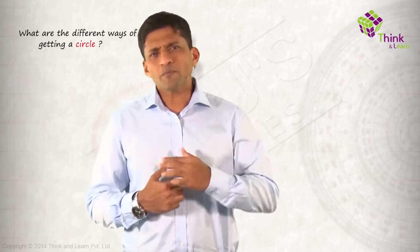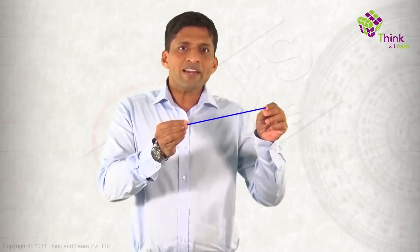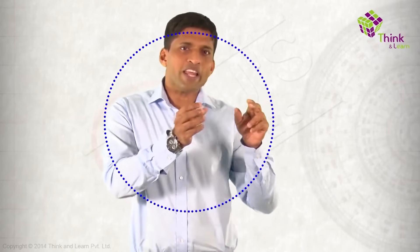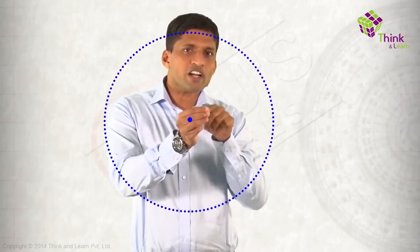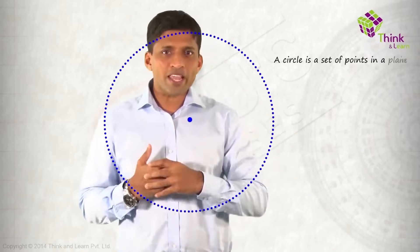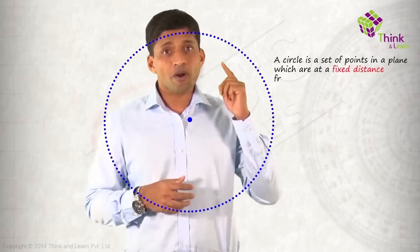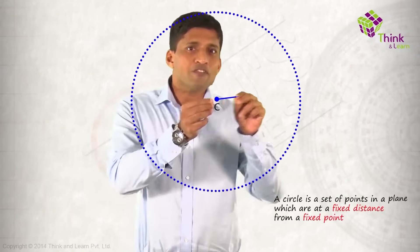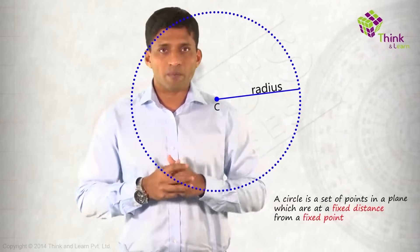So if I ask you a question: what are the different ways of getting a circle? The simplest way is to take a line and just rotate it, so we get a circle like that. A circle is a set of all the points in a plane which are at a fixed distance from a fixed point. This fixed point is called the center of the circle, and the fixed distance is called the radius of the circle.